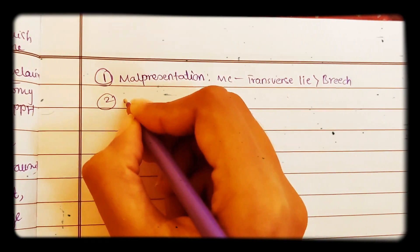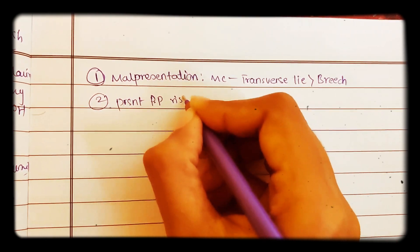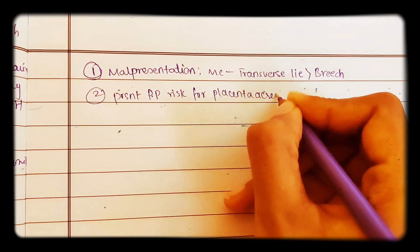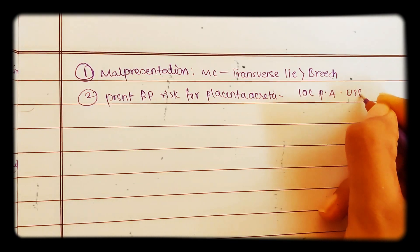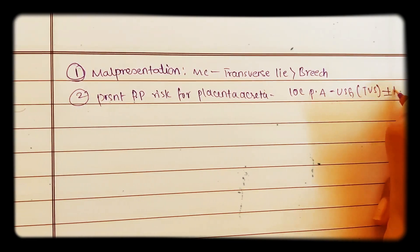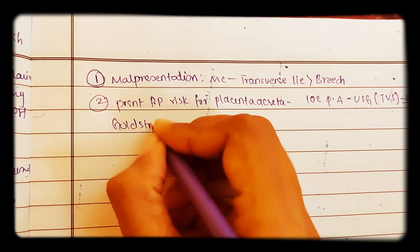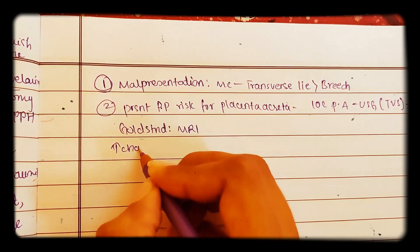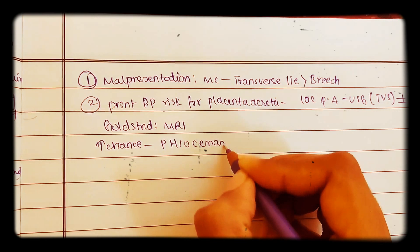The second complication is placenta accreta. If there is already present placenta previa, then there is a risk for placenta accreta. The investigation of choice for placenta accreta is USG with transvaginal scan with or without Doppler, and the gold standard is MRI.